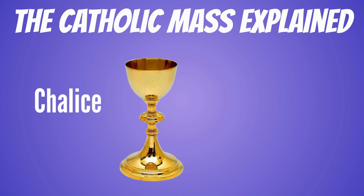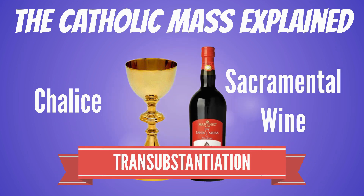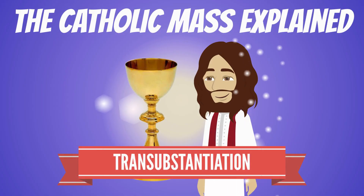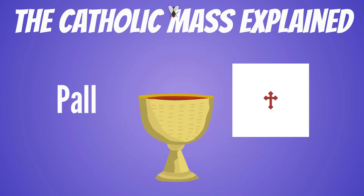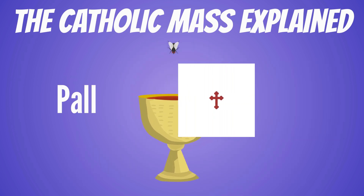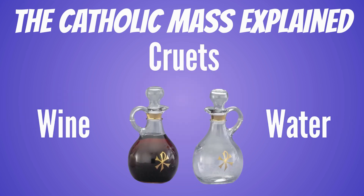The chalice is the cup used to hold the sacramental wine which undergoes transubstantiation — or transformation of substance — into the sacred blood of Christ during the consecration; more in-depth explanation of this later on. The pall is a square white cover to prevent things from falling into the chalice. On the altar we also have the cruets: one has water and the other has wine.